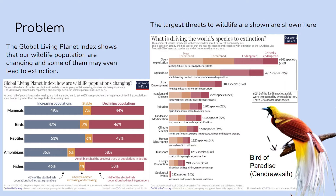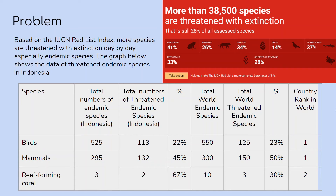We now have a global problem where the wildlife population is decreasing and some of them are even threatened to extinction due to various reasons. The largest are from over-exploitation and agriculture. Indonesia is one of the countries that has the largest number of threatened endemic species in the world and if we don't start conserving them, they will be at risk for extinction.